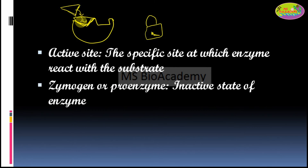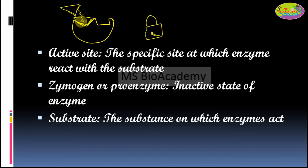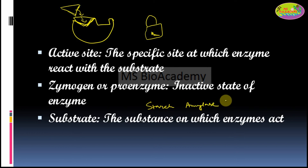Zymogen, or proenzyme, refers to the inactive state of an enzyme. If the enzyme is in an inactive state, it is called a zymogen or proenzyme. Substrate means the substance on which the enzyme acts. For example, amylase acts on starch, so starch is the substrate for amylase. These are the main terms used when studying enzymes.